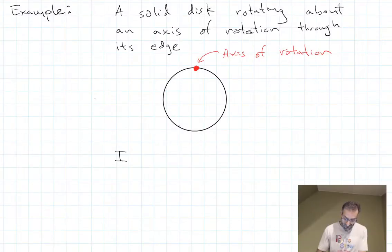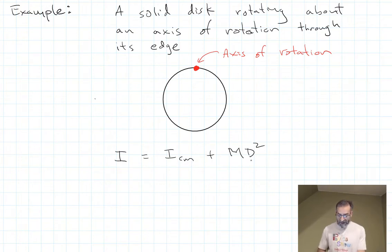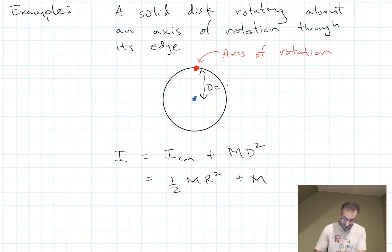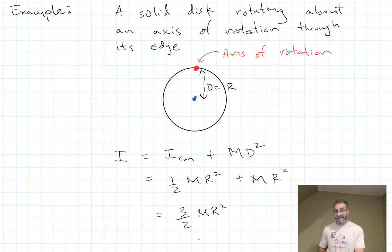So we say I about the axis of rotation we're interested in equals I about the center of mass plus M D squared. We just looked up I_cm = one-half M R squared. And D in this case is just equal to the radius of our disc, since the center-of-mass axis is at the center. So we get three-halves M R squared.